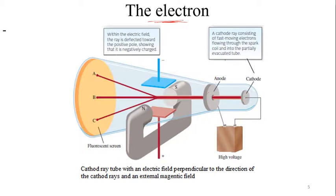When the high voltage is applied, the cathode produces a ray that flies from the cathode and hits point A. When a magnetic field is applied, the ray deviates to point A. Applying an electric field in the middle of the tube deviates the ray to point C. Applying both the magnetic and electric fields at the same time causes the ray to hit point B again.